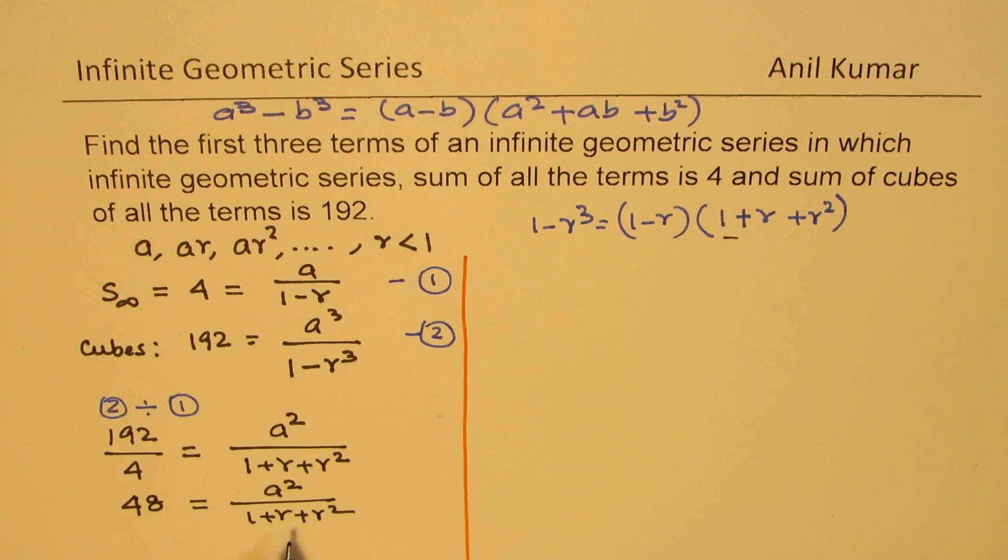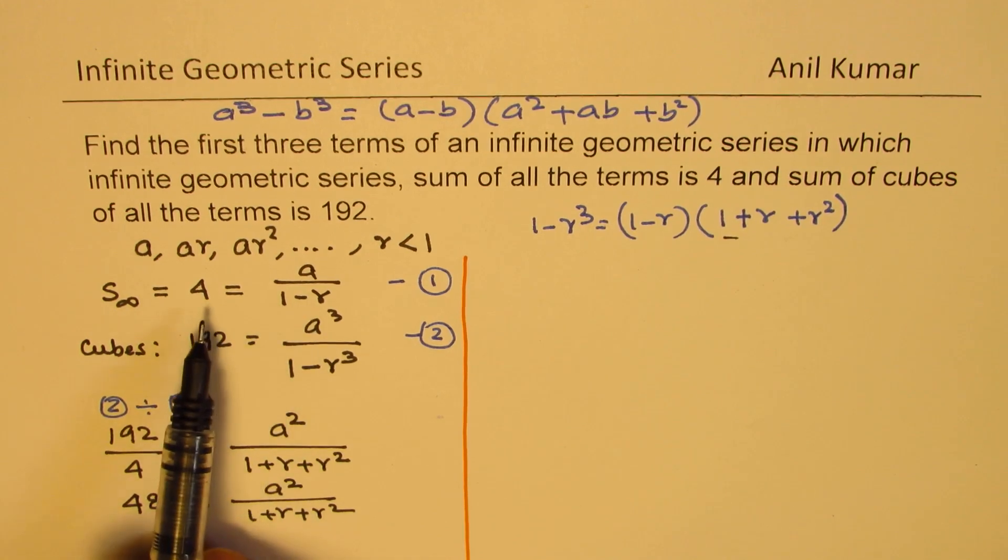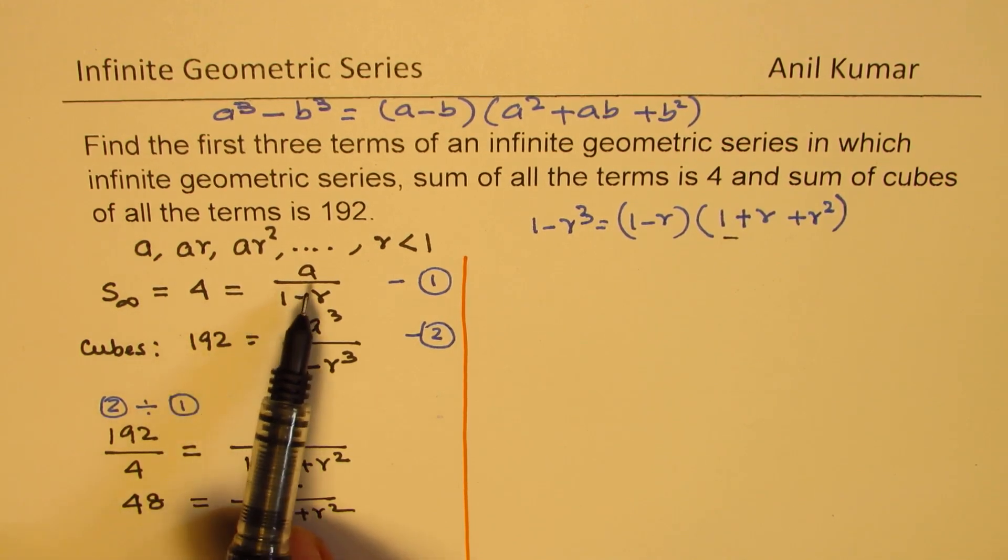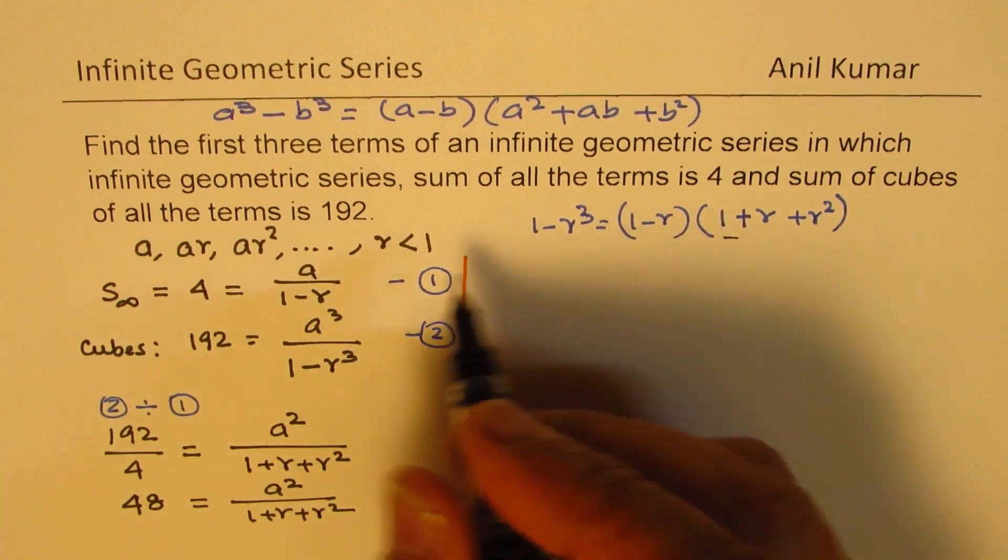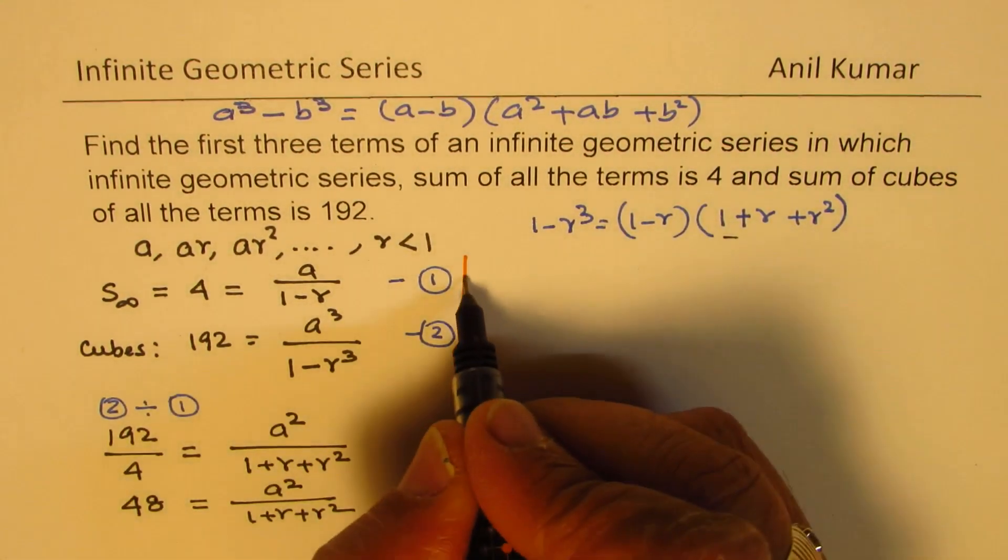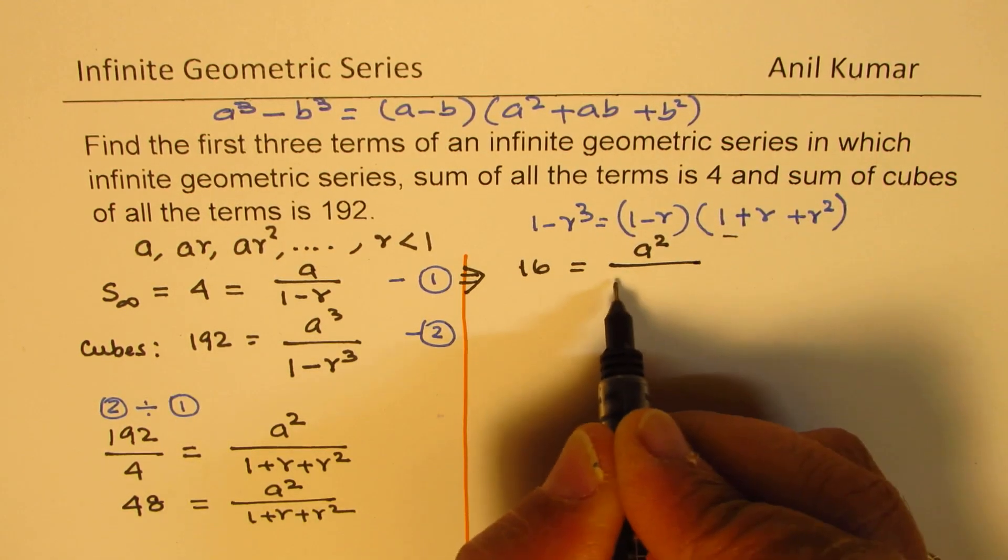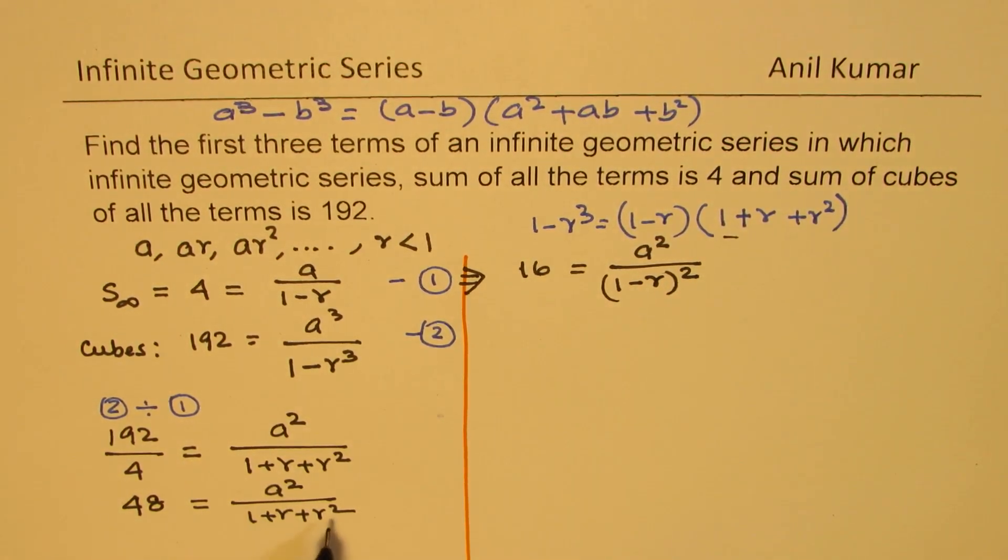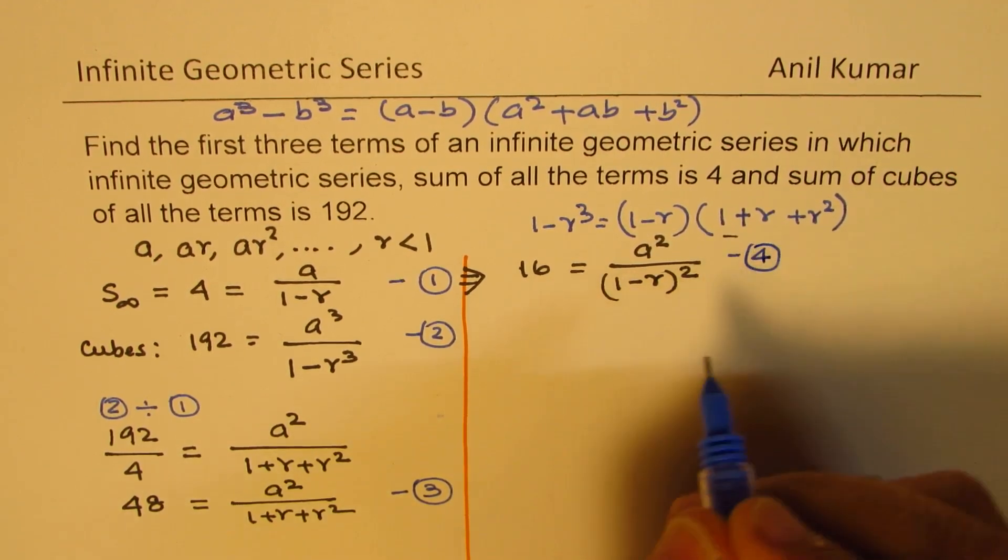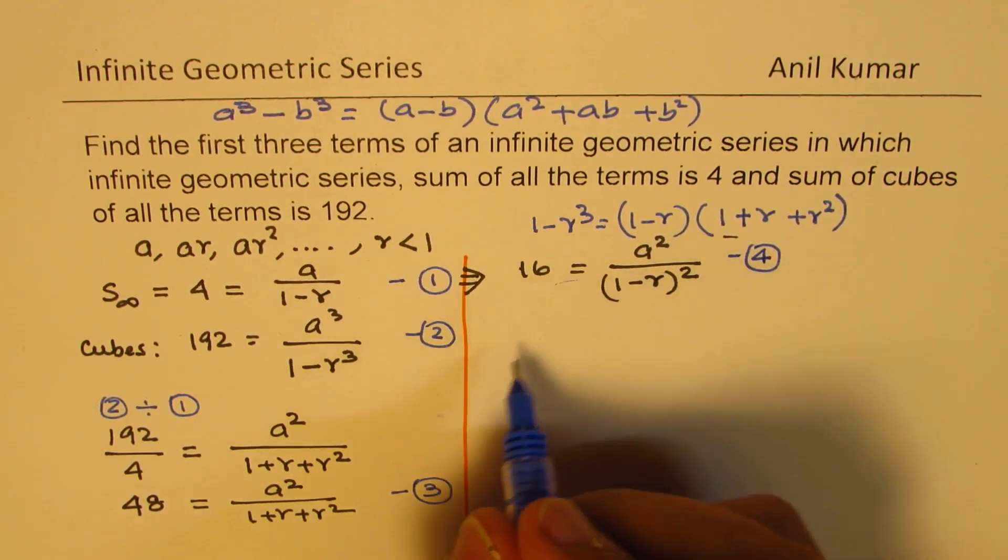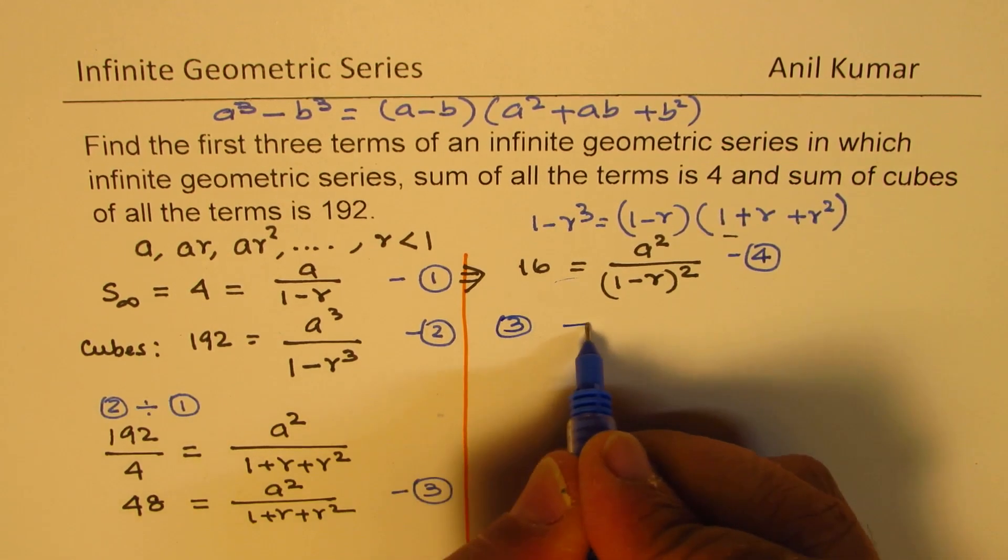We got one equation in terms of A square and R squares. Now we need to simplify this. We see that the first equation is 4 equals to A over 1 minus R. So if I square this, I get 16. So from here, 16 equals to A square over 1 minus R whole square. Let me call this as equation 3 and this as equation 4. Now to get rid of A square, we could divide equation 3 by equation 4.